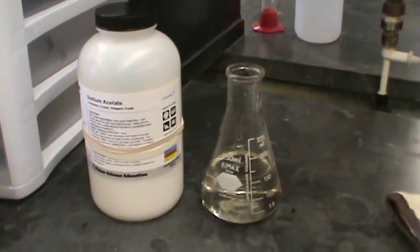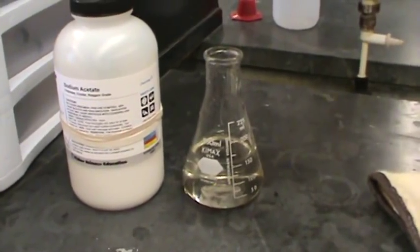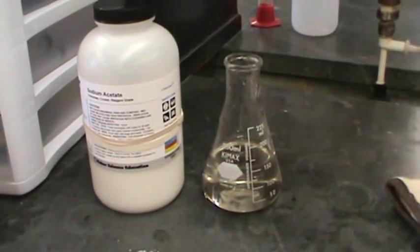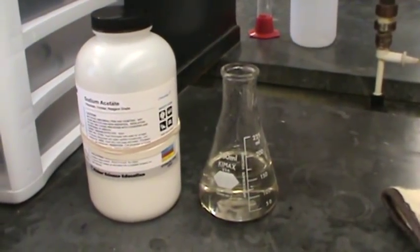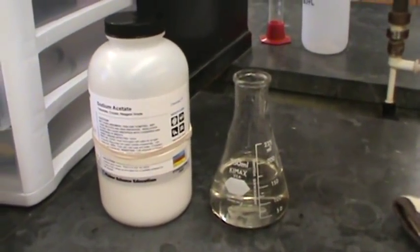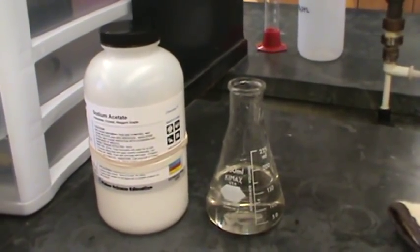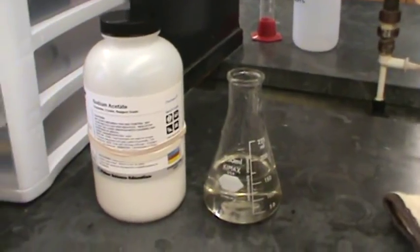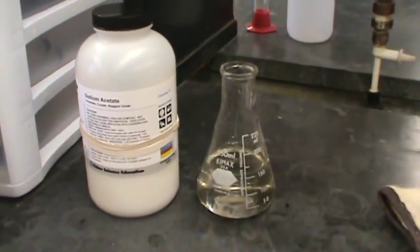Okay, on the right, in the Erlenmeyer flask, there's a supersaturated solution of sodium acetate. It was prepared by dissolving 175 grams of sodium acetate trihydrate in 50 mils of water. And you have to heat the solution to get all of the solid sodium acetate trihydrate to dissolve.